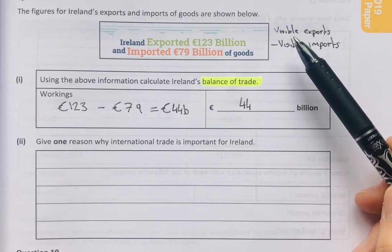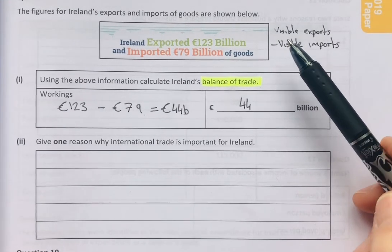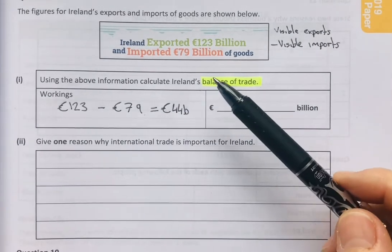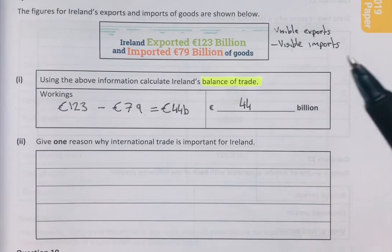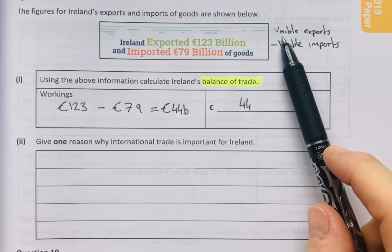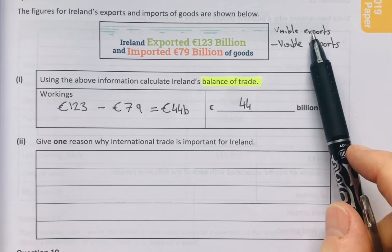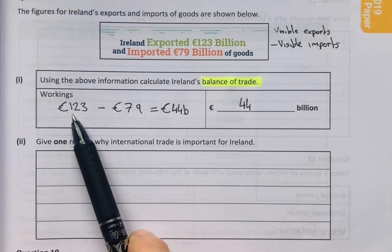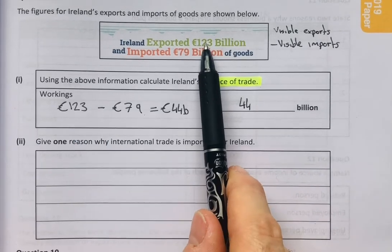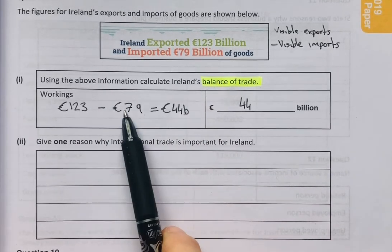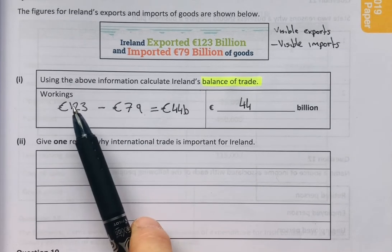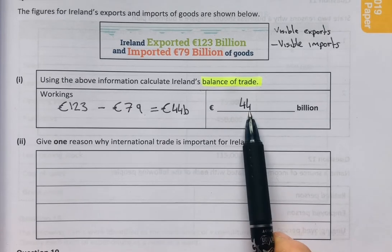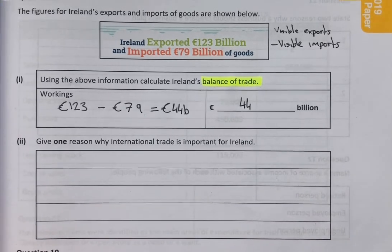The balance of trade is one of the ways in which we can measure international trade and all of the exports and imports coming into and leaving our country. The formula for balance of trade is visible exports minus visible imports. Over to my workings box — exports are given at 123 billion, imports are given at 79 billion. Exports minus imports leaves me with 44 billion. Then transfer your answer over to the answer box.